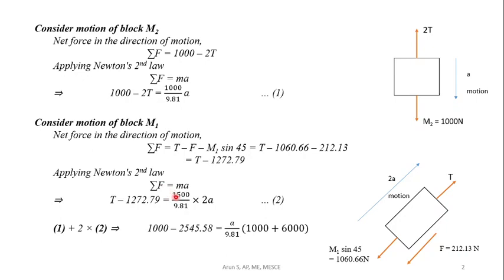1000 plus 1500 is 3000, times 2A equals 6000A. Solving, we get A to be minus 2.17 meters per second squared.